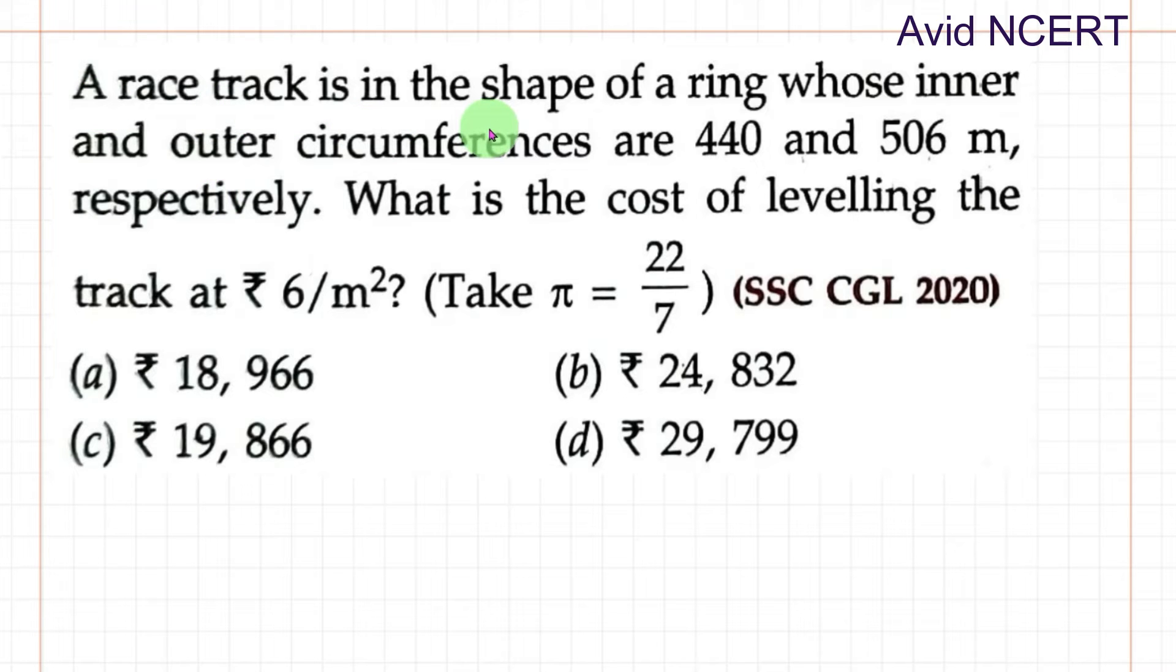A racetrack is in the shape of a ring whose inner and outer circumferences are 440 and 506 meters respectively. What is the cost of leveling the track at rupees 6 per meter square? We have to take the value of pi as 22 by 7.